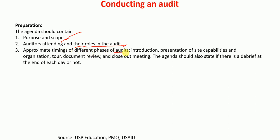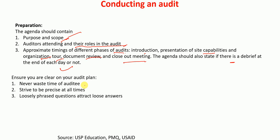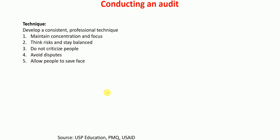The agenda should include approximate timings of the different phases of the audit — for example, introduction, presentation of site capabilities, organization tour, document review, and close-out meeting — and should state whether there is a debrief at the end of each day. Auditors should ensure they are clear on the audit plan, never waste time, and should be precise at all times, knowing that loosely framed questions attract loose answers. The auditor should develop a consistent and professional technique, maintain concentration and focus, think about risk, stay balanced, not criticize people, avoid disputes, and allow people to save face.